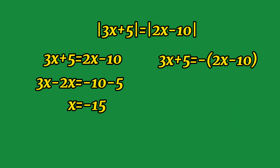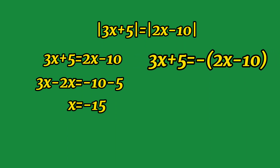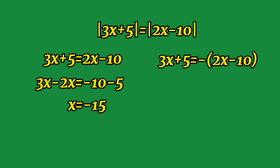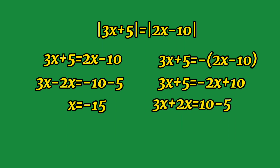For the other equation, we have 3x + 5 = -(2x - 10). Solving the right side gives us -2x + 10. Transposing -2x to the left and 5 to the right, we have 3x + 2x = 10 - 5. Performing the operation, 5x = 5. Dividing both sides by 5, we get x = 1.